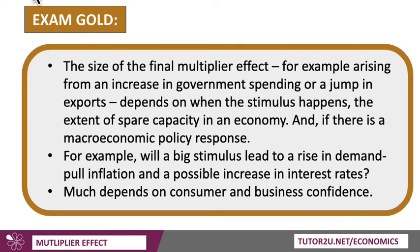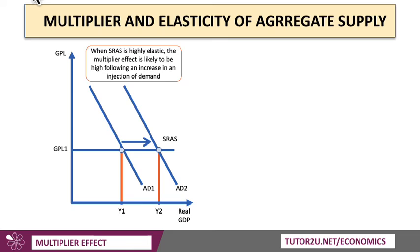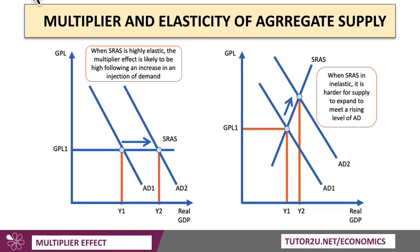For any initial change in demand and incomes, the knock-on ripple spending effects depend on the current state of consumer and business confidence — or as Keynes called it, animal spirits. The multiplier effect tends to be higher when aggregate supply in the short run is highly elastic, and the increase in aggregate demand can flow through to a big rise in national income. Whereas when aggregate supply is inelastic, as shown here, it's harder for production to expand to meet an increasing level of demand, and the rise in real GDP will be less for a given change in aggregate demand.